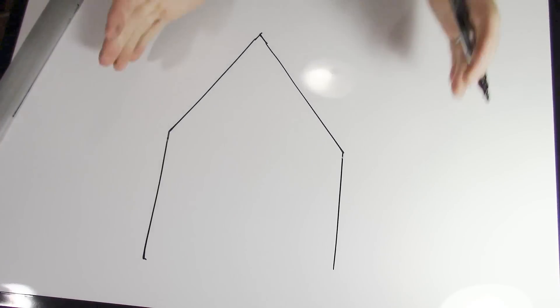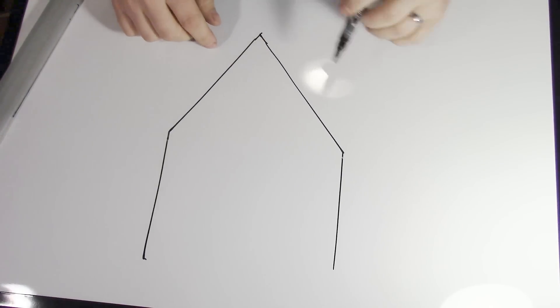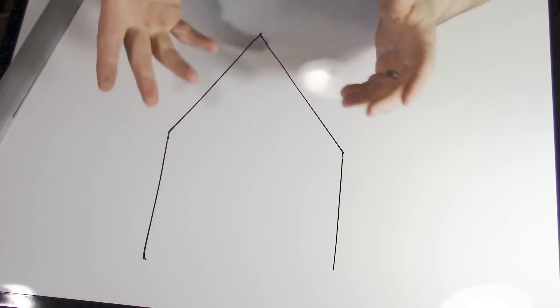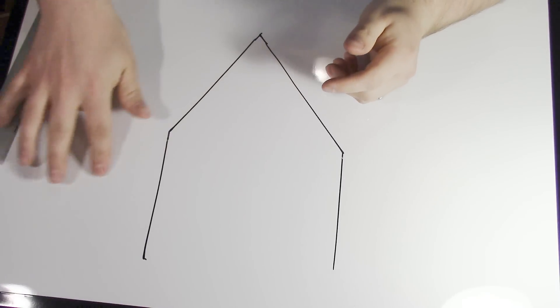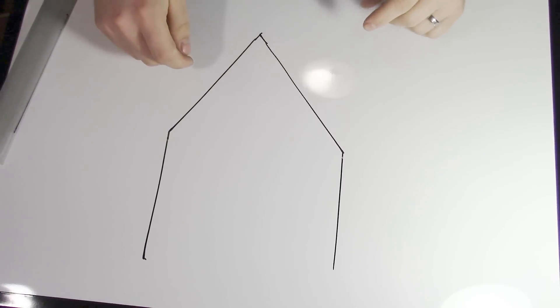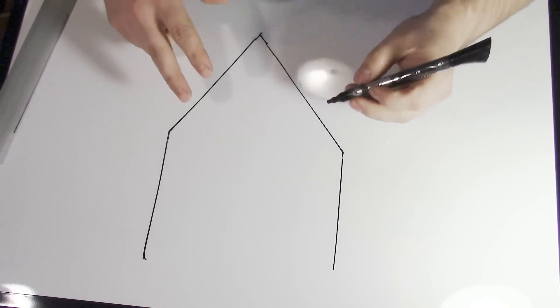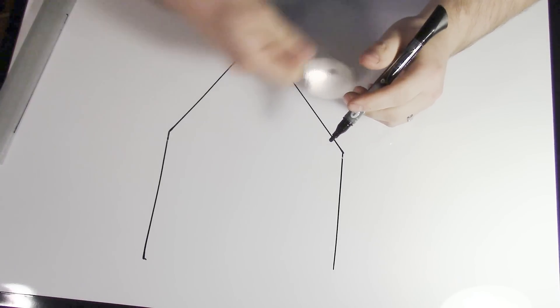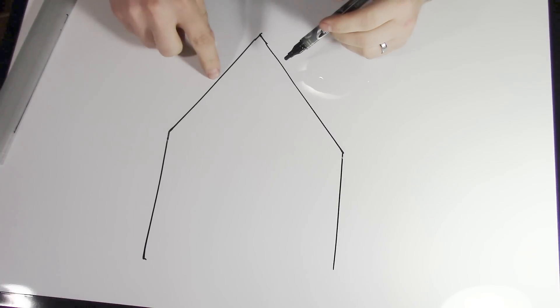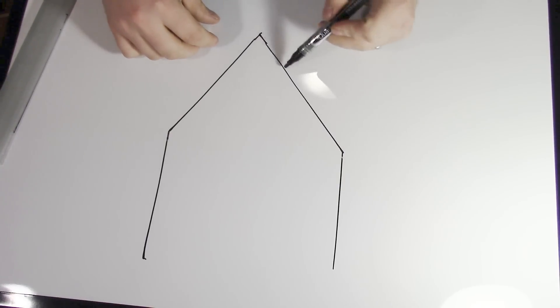What people are doing is you're using a compounded strop or something that removes steel fairly quickly, and this is how you're maintaining your Scandi's all the time, stropping on this compound. It's removing steel, but where it's removing steel is right at this edge here.